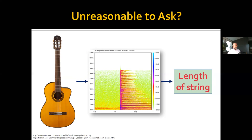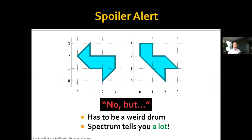Unfortunately, the question 'can you hear the shape of a drum?' was quickly answered in the negative originally, in an extremely high-dimensional geometric space that wasn't particularly practical. Then maybe 10 or 20 years later, folks actually managed to come up with two isospectral shapes that are really simple shapes in the plane. If you construct these two drums in the shape shown on the slide, they should, at least in theory, sound pretty much exactly the same. But the takeaway, both empirically and from the mathematics, is that you have to have a really special drum for this to happen.